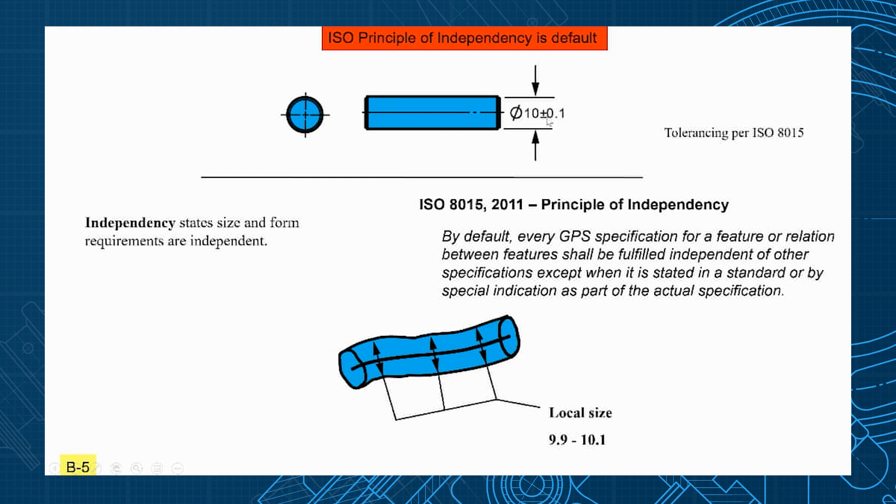So in ISO if you state 10 plus or minus 0.1 that's going to be local size 9.9 to 10.1 and that's when you have tolerancing per ISO 8015 on your drawing.